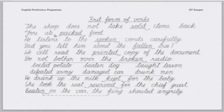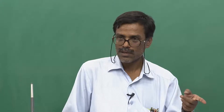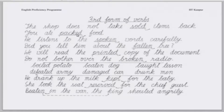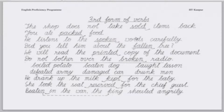You ate packed food. — 'Pack ki hui khana khaya.' What kind of food? Packed food. He listens to the spoken words carefully. What kind of words? Spoken words. So 'spoken' is qualifying the word 'words.' Similarly, did you tell him about the fallen tree? Which tree? The fallen tree — 'fallen' is qualifying the word 'tree.'